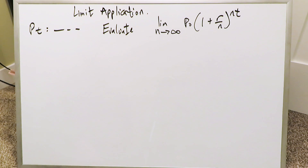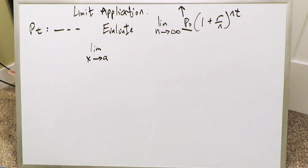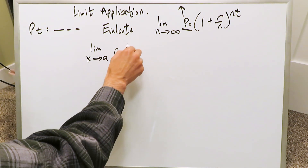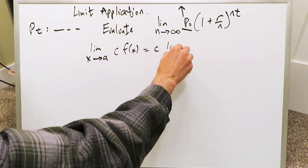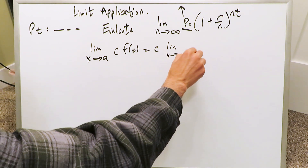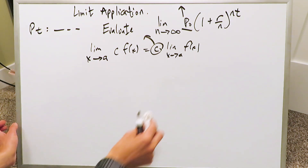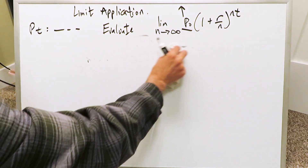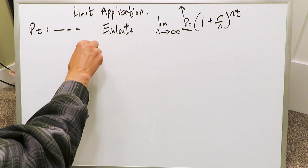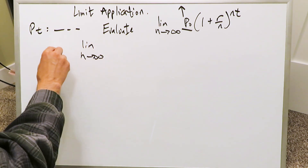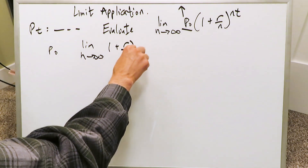We have to evaluate that part. A good thing you can do is take this coefficient and push it outside using the constant multiple property of limits. The c has been pushed out and then you do the evaluation, bringing it back in at the end. Likewise, we push out the principle at time zero, P₀. Now your limit expression is: limit as n approaches infinity of one plus r over n, to the power of nt.